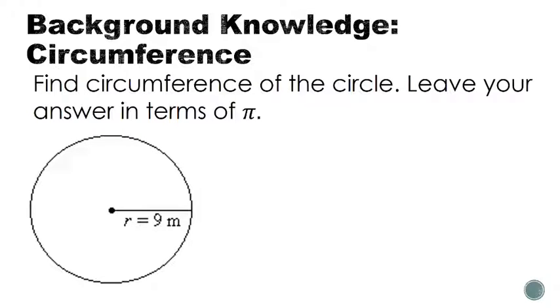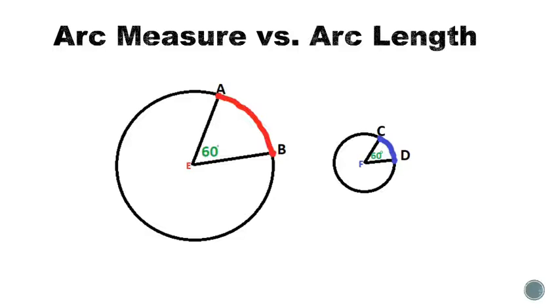To practice that background knowledge, we can find the circumference of this circle which has a radius of 9 meters by using our formula: circumference equals 2 pi times the radius. So we have 2 times pi, and in this case our radius is 9 meters. If I multiply 2 times 9, I could leave that in terms of pi as 18 pi meters, or I could throw that into a calculator to get a decimal approximation of what the circumference would be.